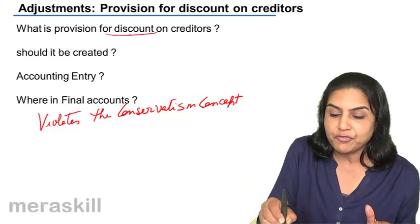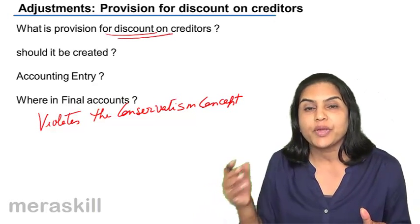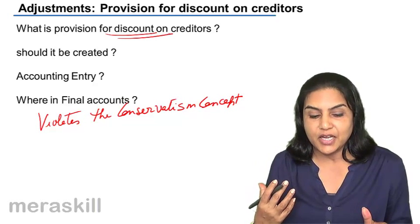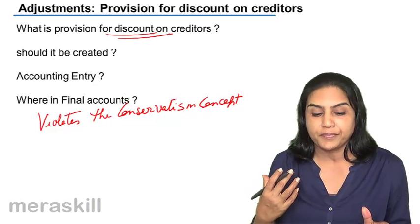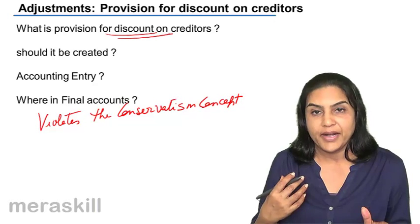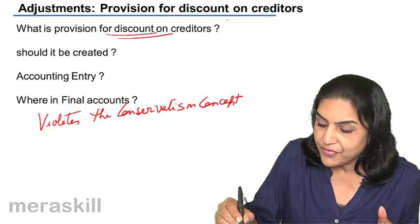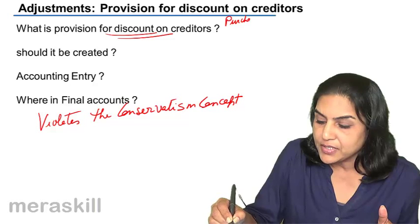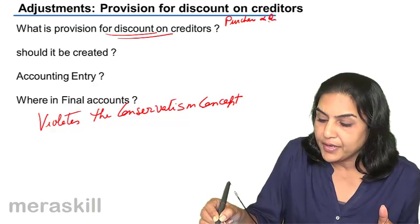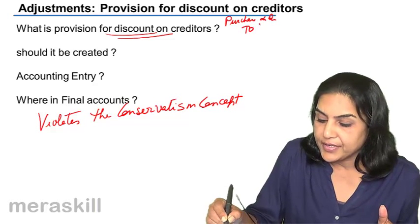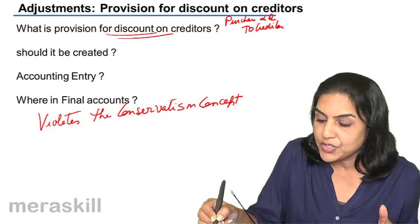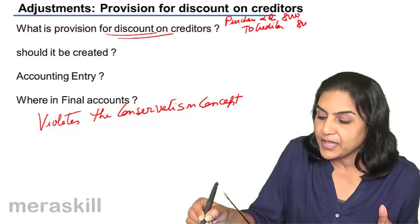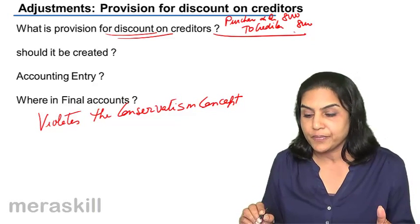But when we talk of a provision for discount on creditors, we are talking of an income. What is this discount on creditors? When we purchase on credit, the entry we pass is: purchase account debit to creditors. Let us say we have purchased goods of value 8,000.